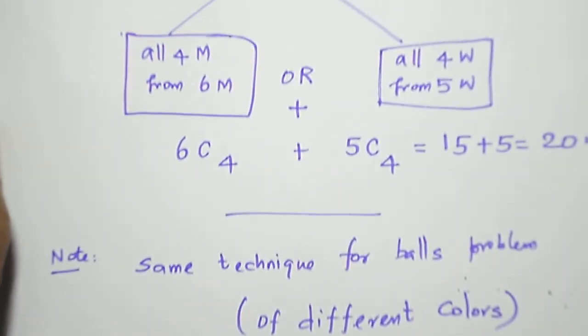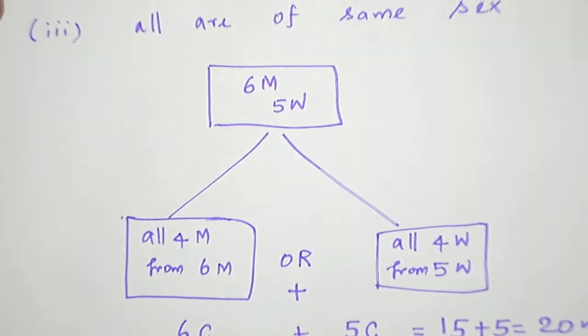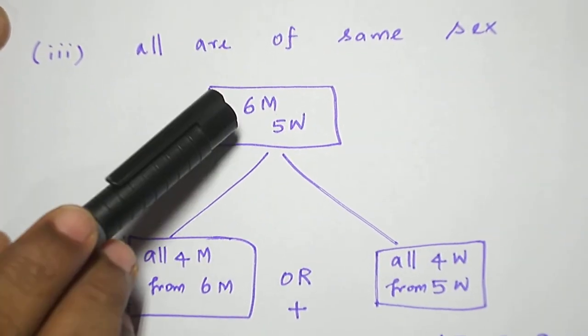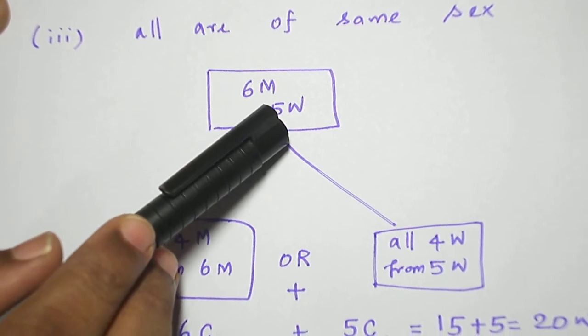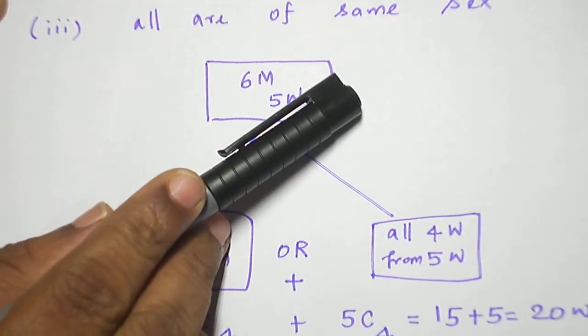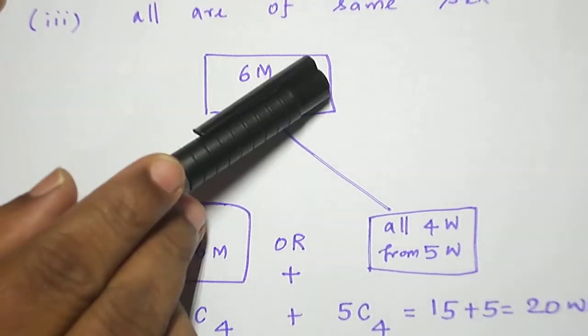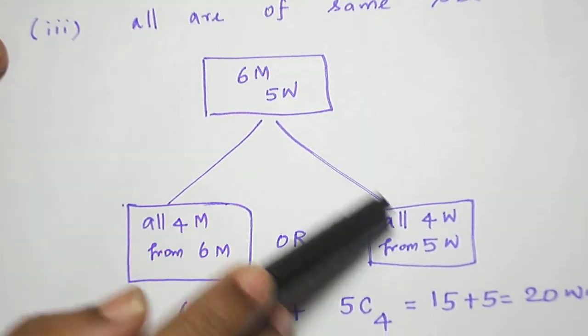The third part of the question: all are of the same sex. Four persons have to be selected from six men and five women with same sex. This is my main task. Let me subdivide it into two subtasks.